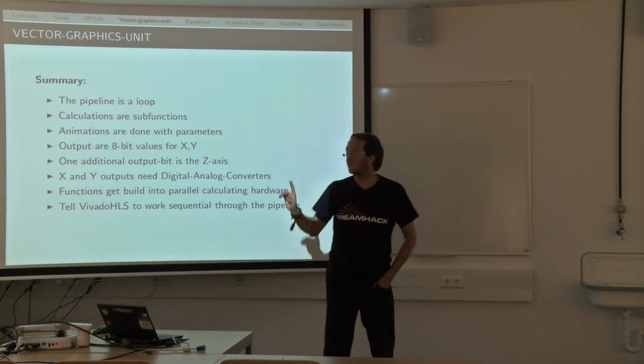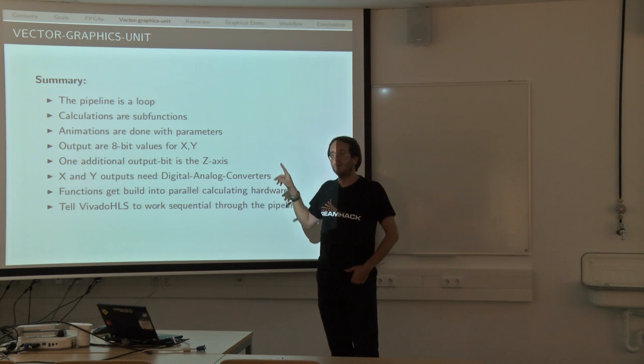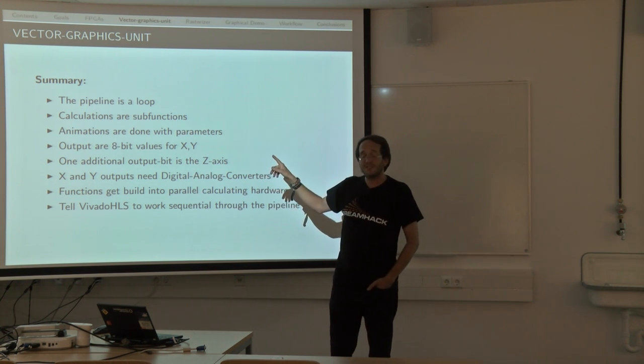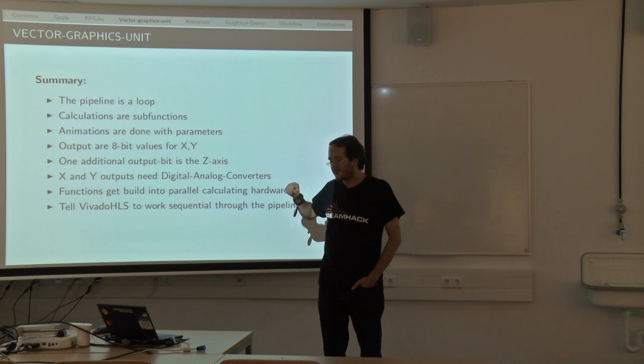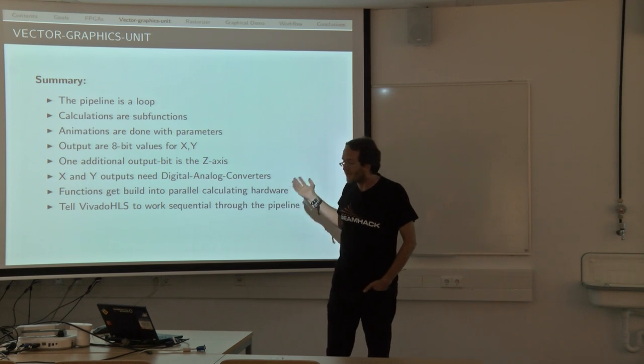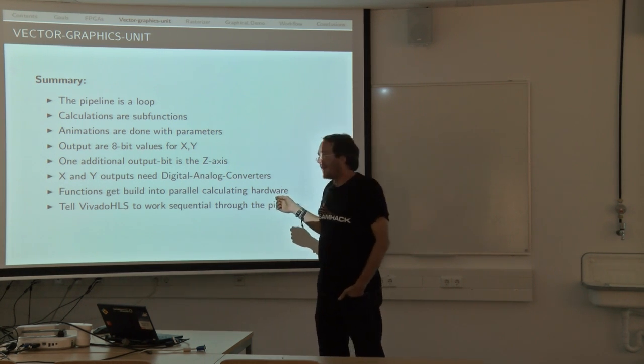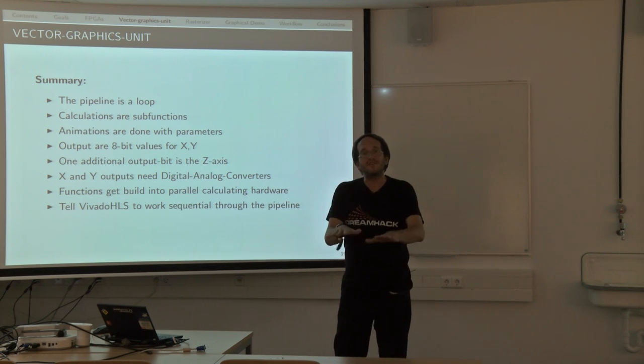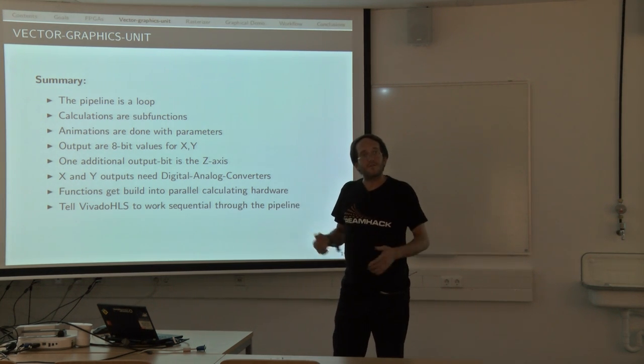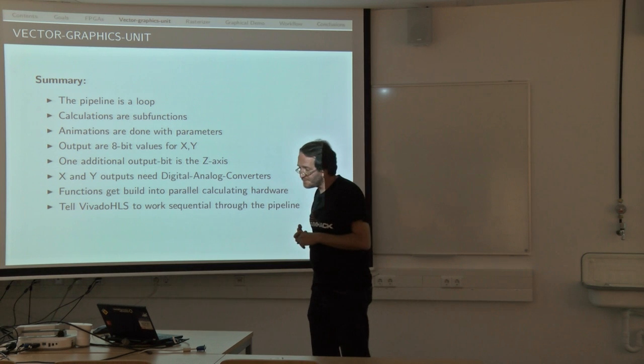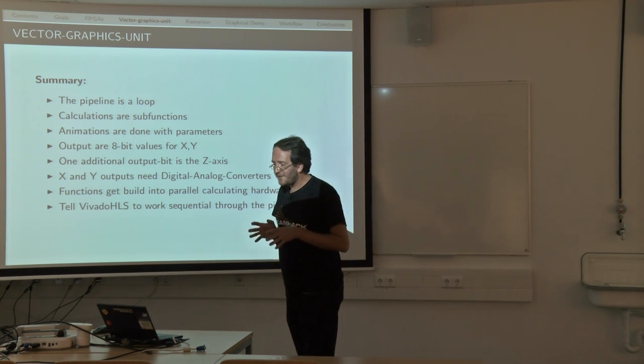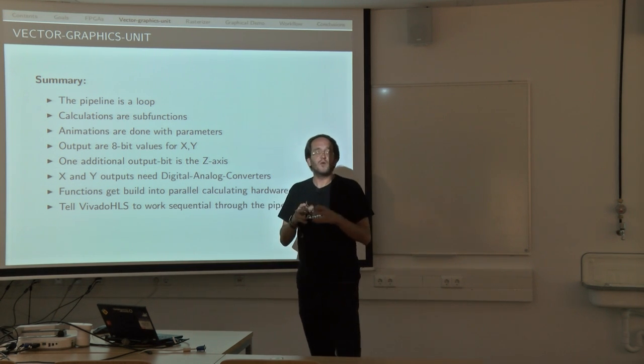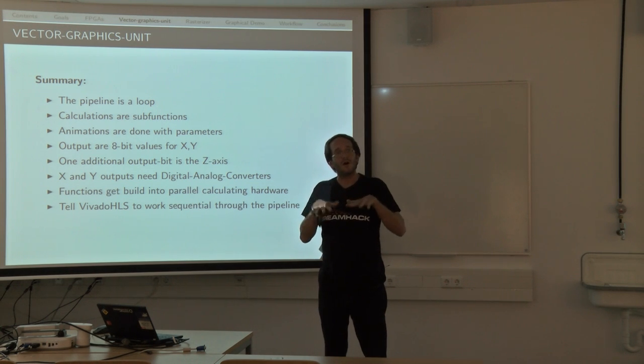To summarize that, we have a pipeline, which is a loop. Inside that pipeline we have sub-functions programmed in C, also the loop in C, all is programmed in C. And they do the calculations. The animations are done via parameters. They get into the functions, the parameters out of which are used for the transformations. And I defined the output values are 8-bit width, which goes to I/O pins.